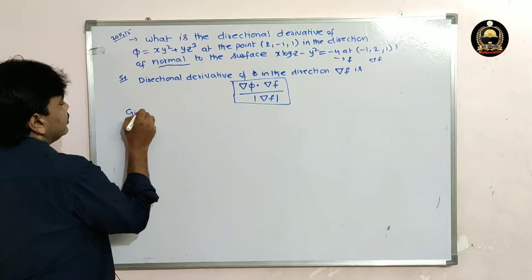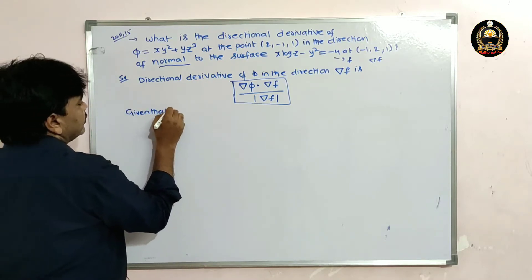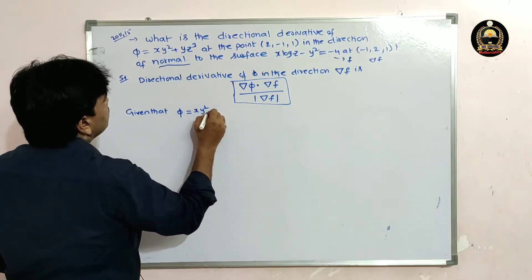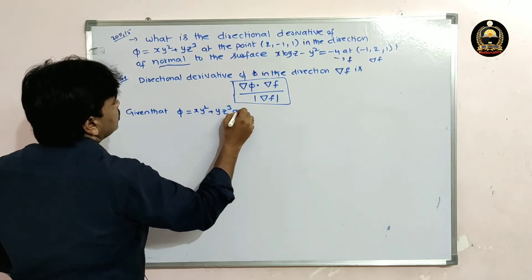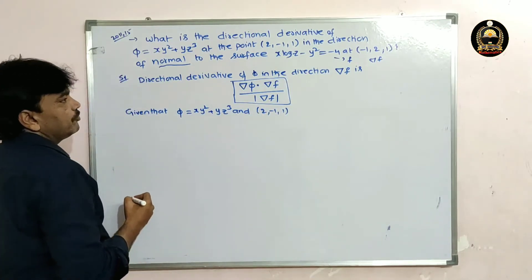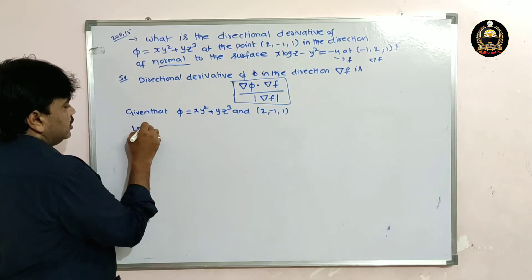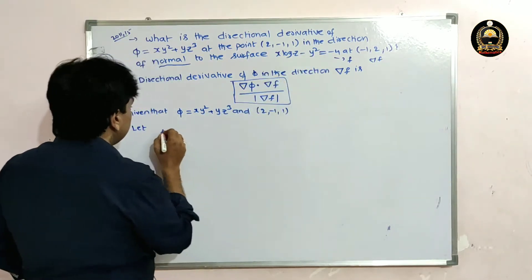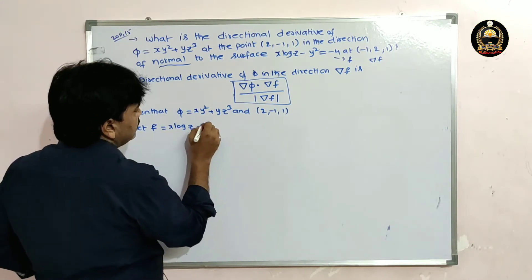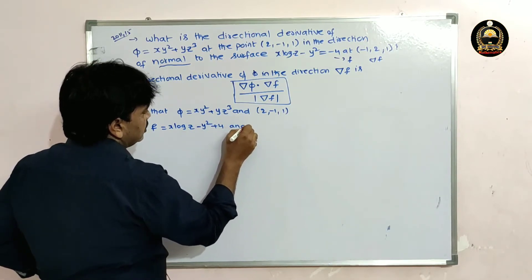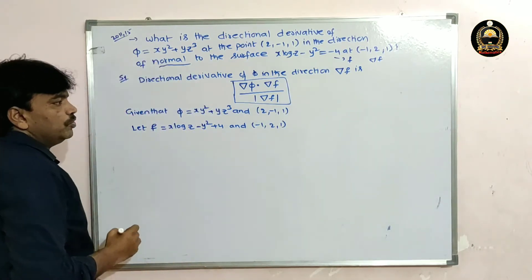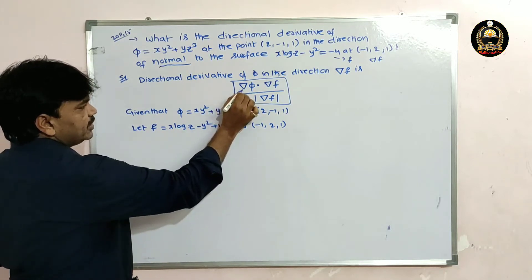Given: phi = xy² + yz³, at point (2, −1, 1). Let f = x·log(z) − y² + 4, and the point given for f is (−1, 2, 1).